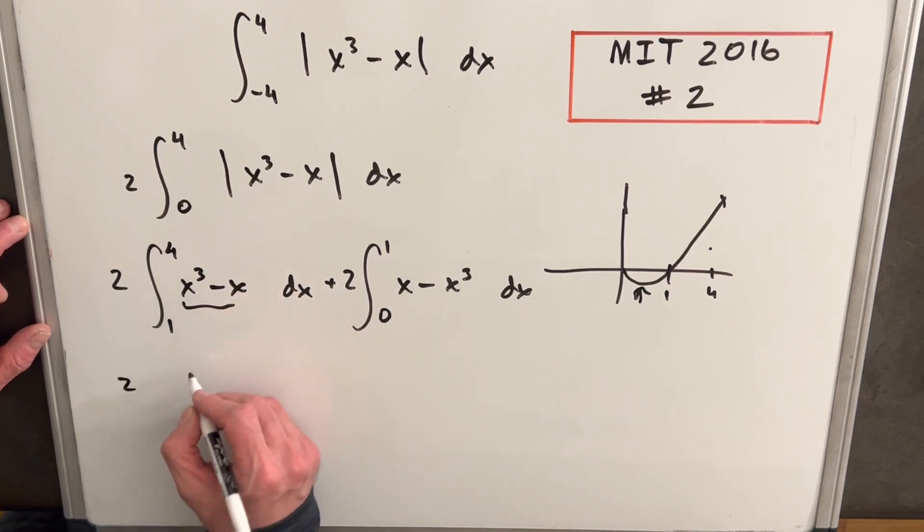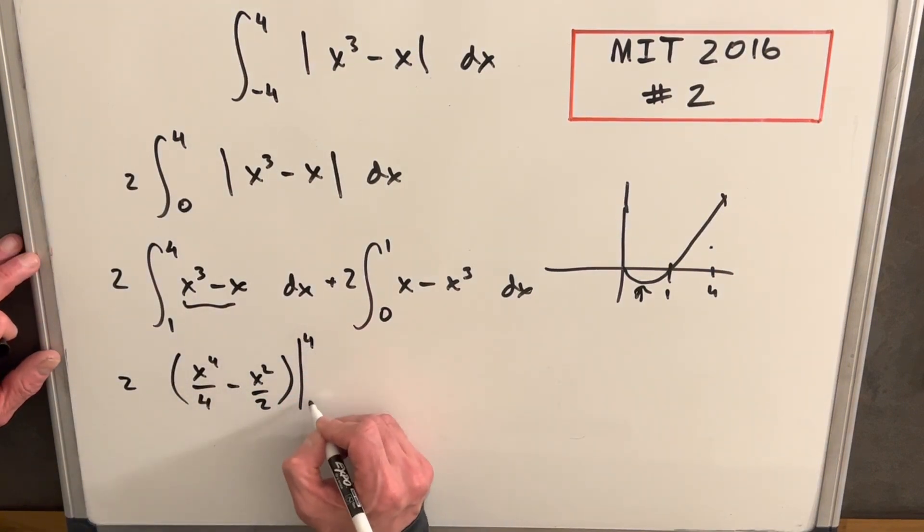So for the first integral, okay, so power rule, it's going to be x to the four over four minus x squared over two, evaluating from four to one. And then for our next piece, this integral, we're going to have x squared over two,